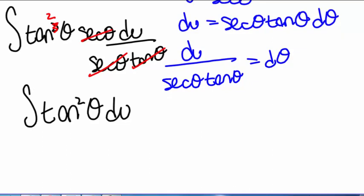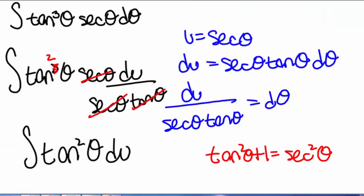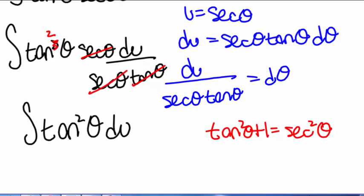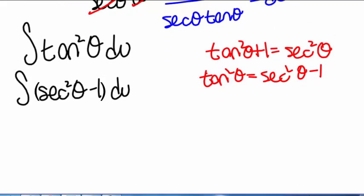Instead, let's use our Pythagorean identity: tangent squared of theta plus 1 equals secant squared of theta, so tangent squared of theta equals secant squared of theta minus 1. Our integral becomes the integral of secant squared of theta minus 1 du. Since secant of theta is u, secant squared of theta is u squared, giving us the integral of u squared minus 1 du.